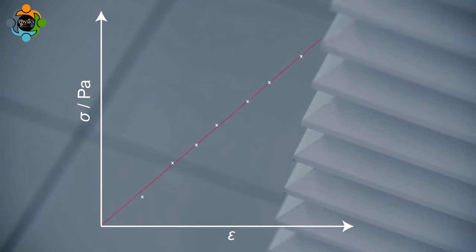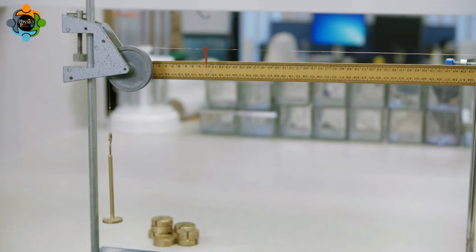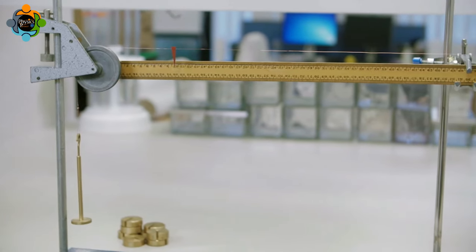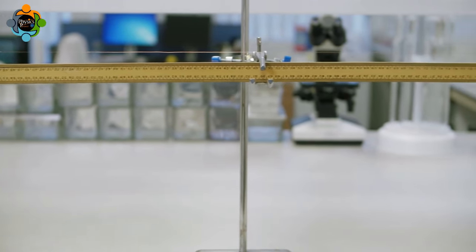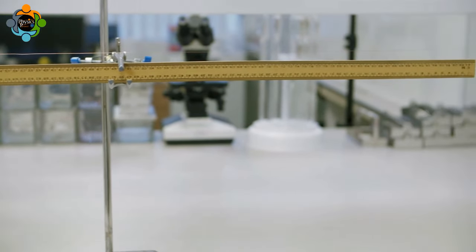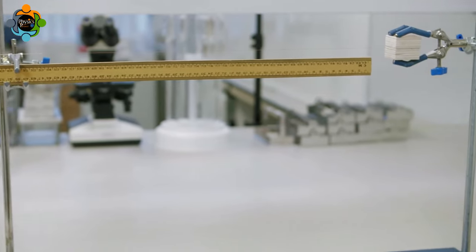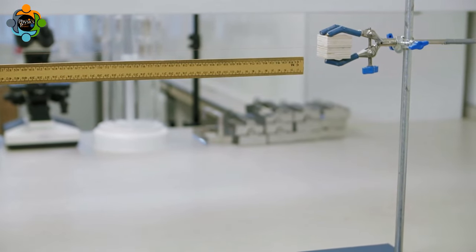The gradient of the linear section of the line of best fit is therefore equal to the Young's modulus. This experiment has demonstrated how to calculate the stress and strain when the tensile force on a wire is varied. By plotting a graph of stress against strain, the Young's modulus of the wire can be determined.